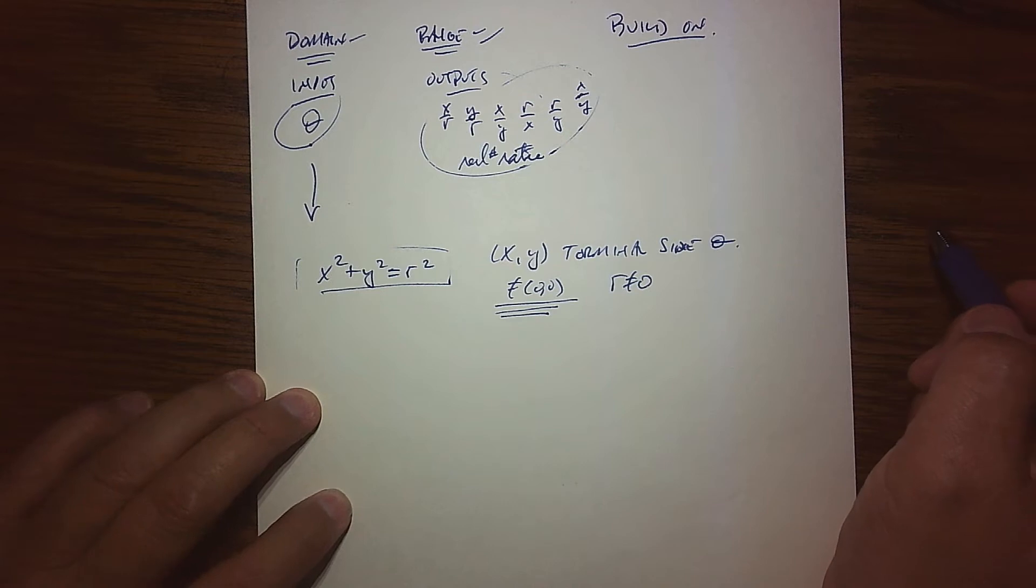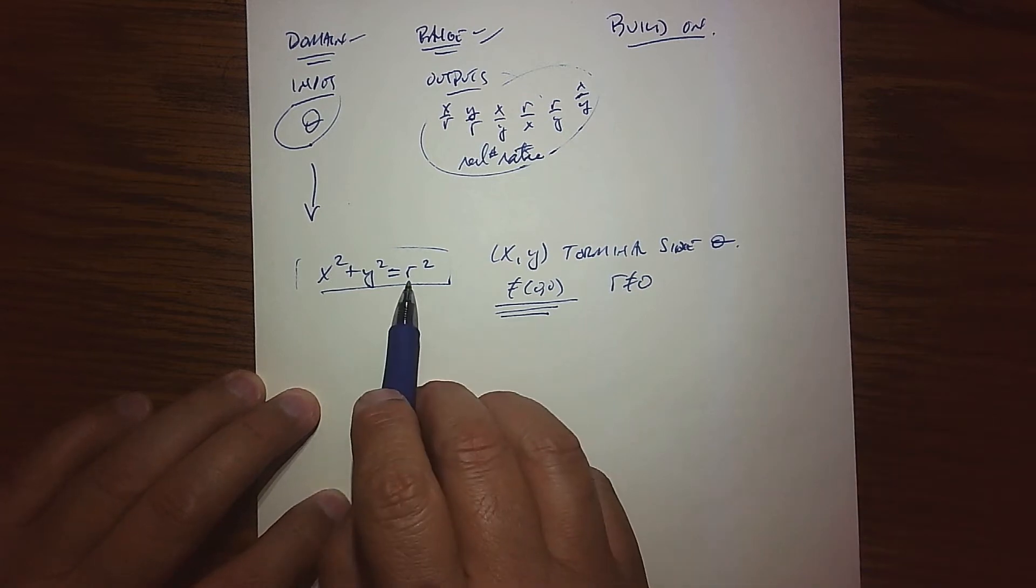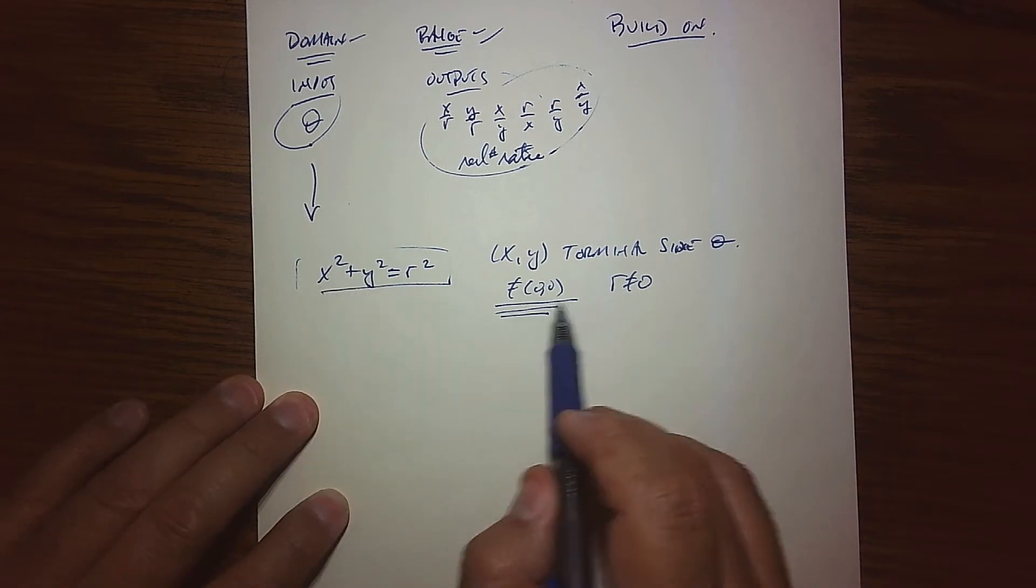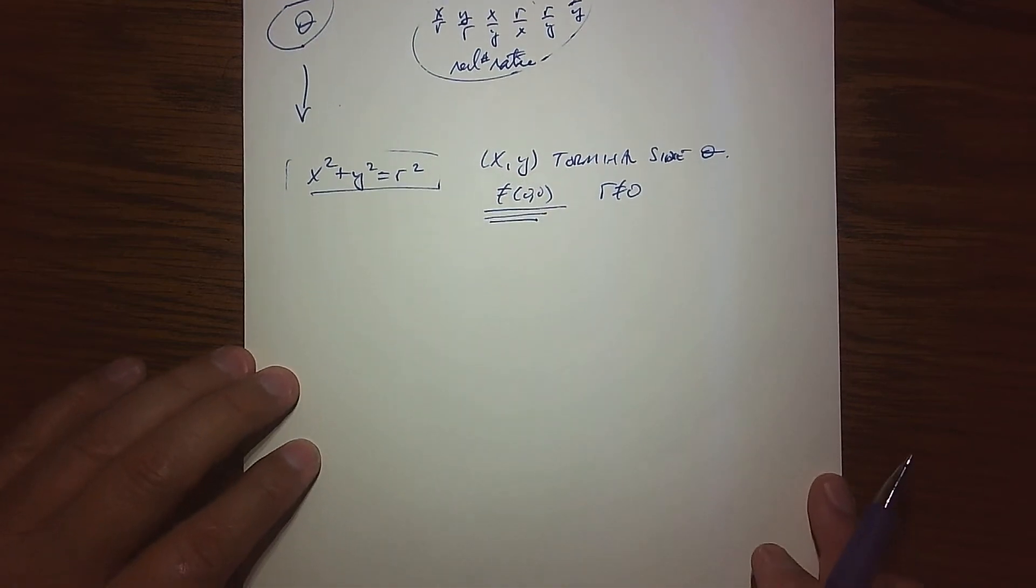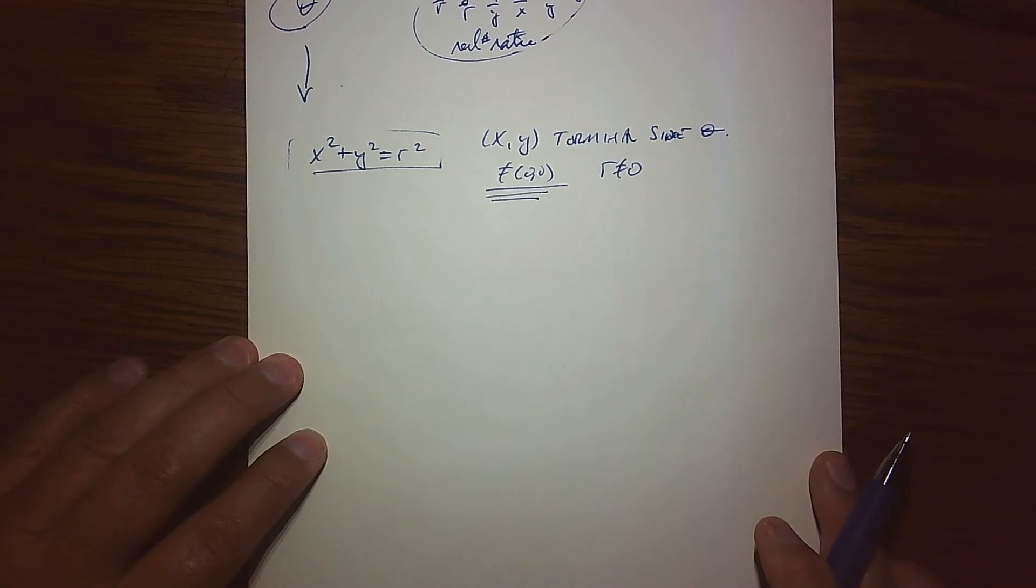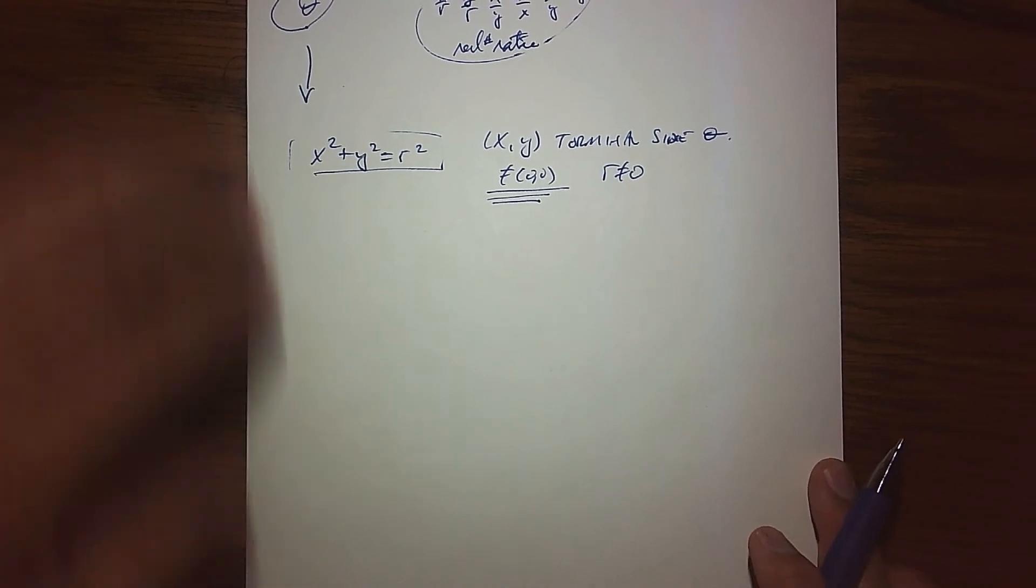The fact that it can't be equal to the origin means that R cannot be zero. We can never have R equal to zero because that would force X and Y to be the origin, and we want our terminal side to be somewhere out there.